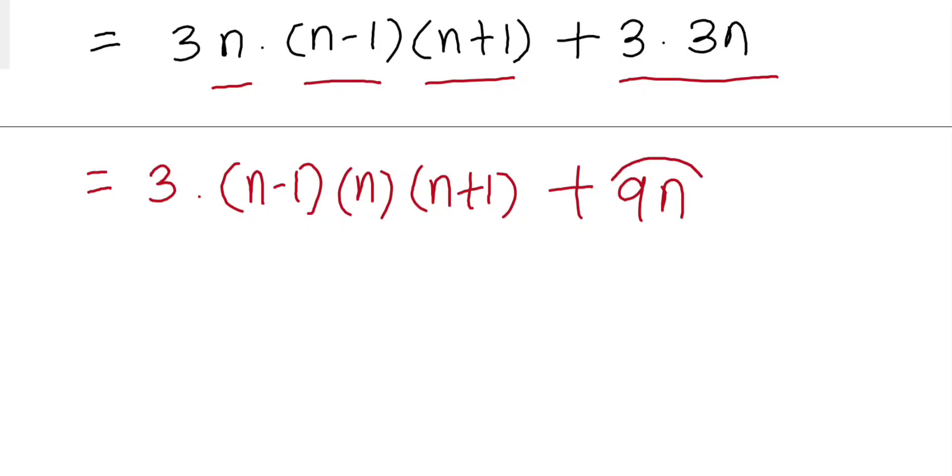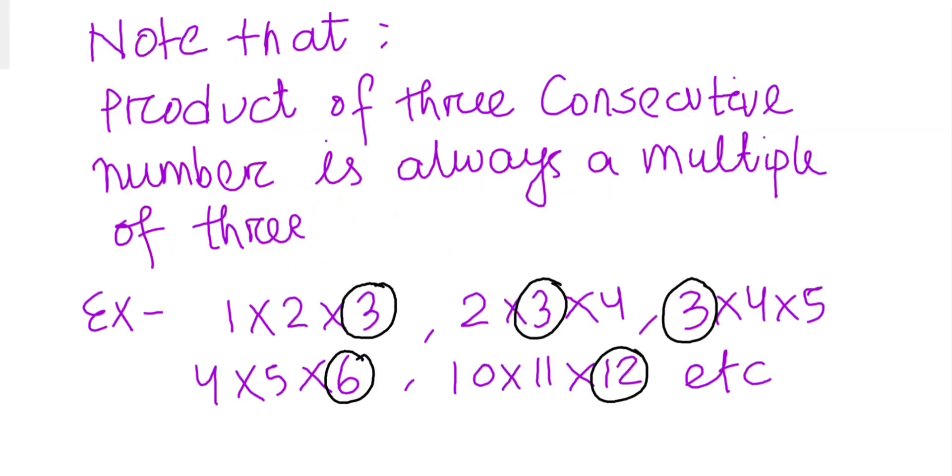So note that the product of three consecutive numbers is always a multiple of 3. You can see these examples, and this is a very elementary problem that you can prove by yourself. So we will use this fact to prove that this part is a multiple of 3.